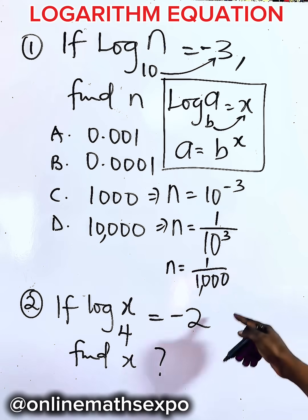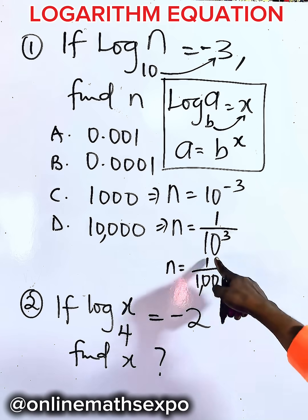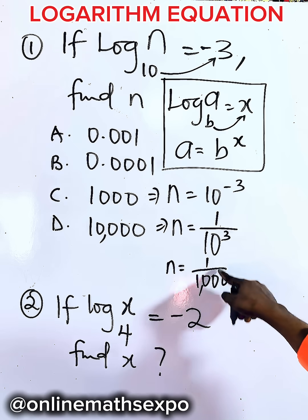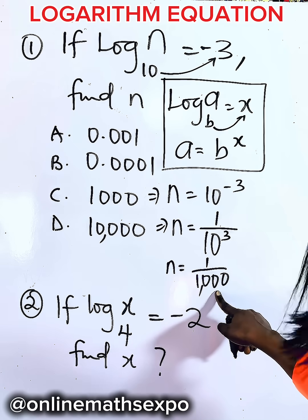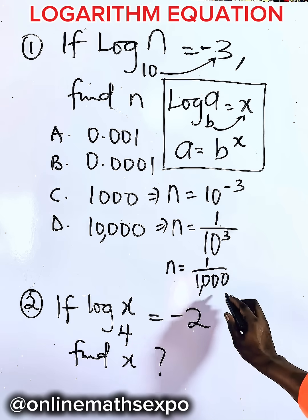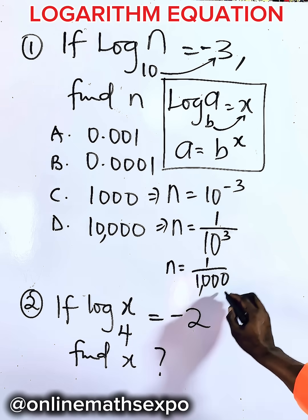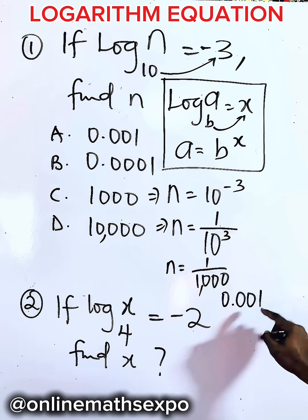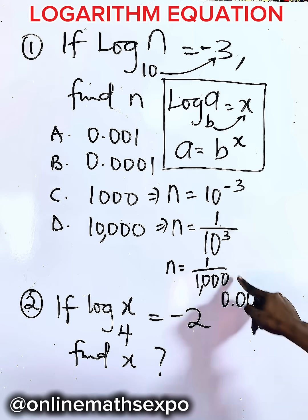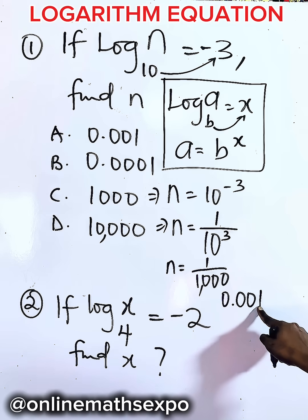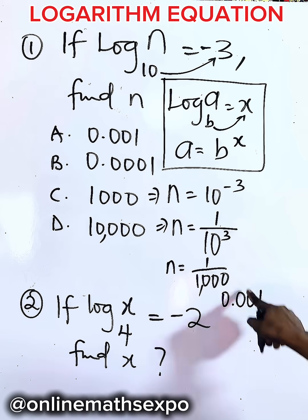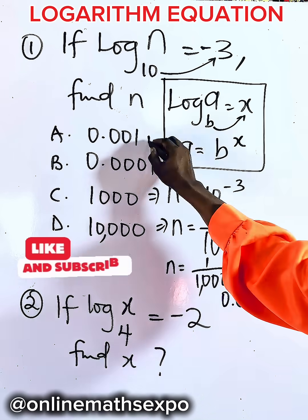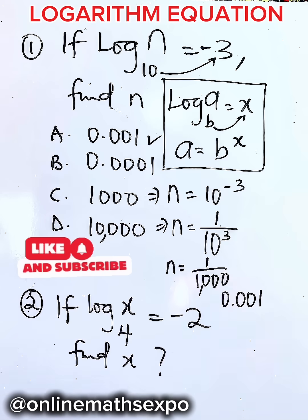So in that case we now have 1 over 1,000, which is the same as 0.001. Expressing that fraction gives you this, and that is option A.